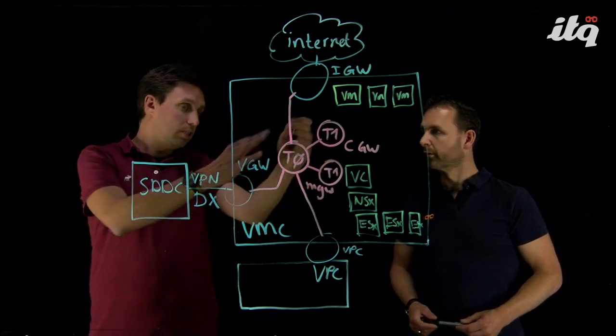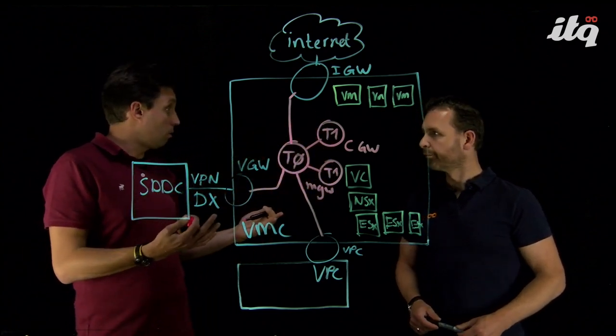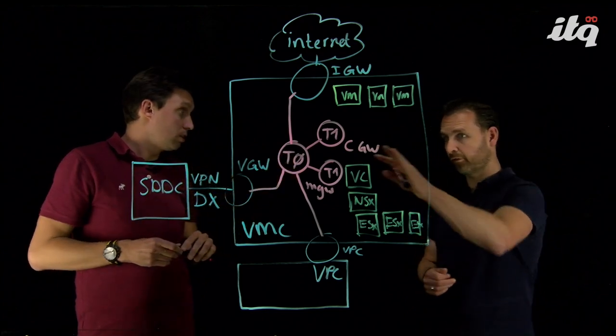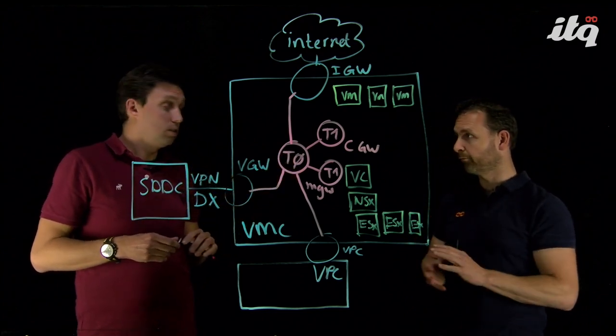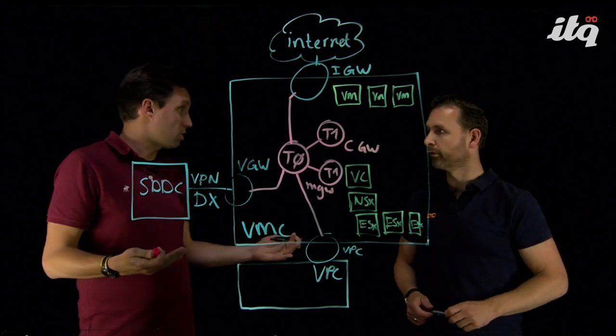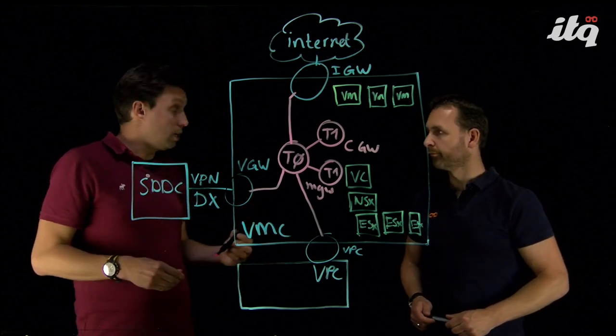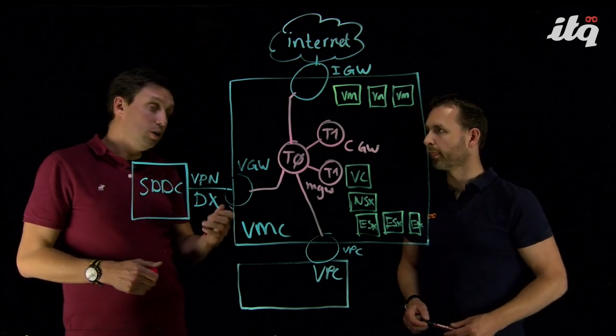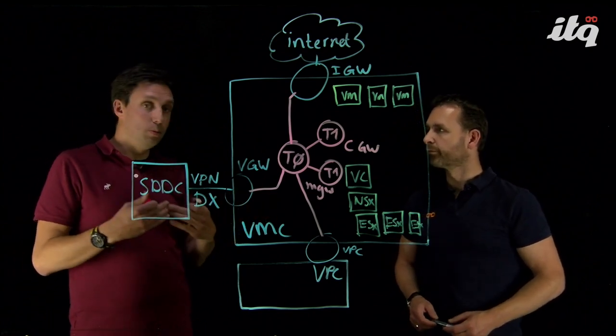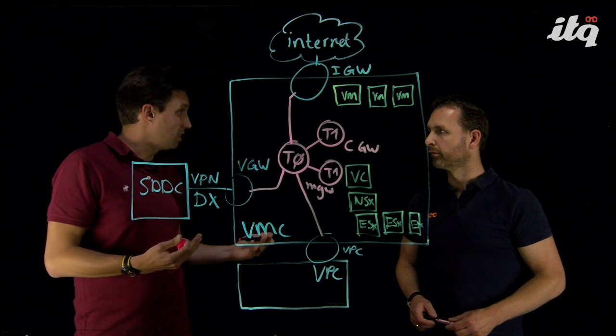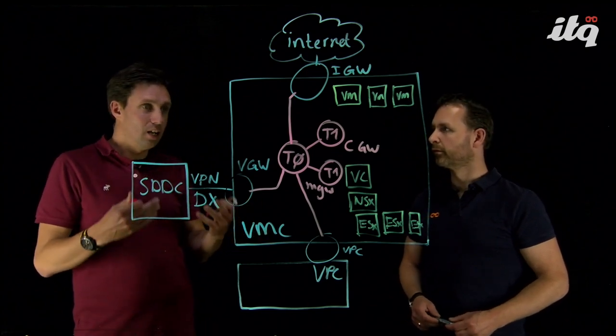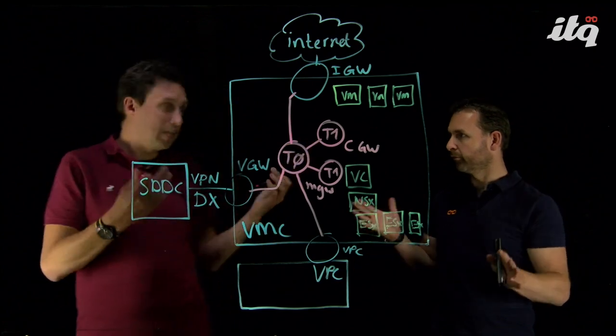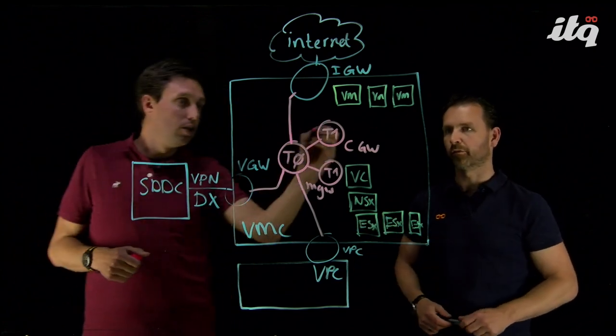These routers are made available by VMware, so it's all pre-configured. So I don't have to deploy these routers myself, I don't need to configure them? No. This is part of the service. You have to do some configuration, for example, for the T1 router, you are able, as a consumer, to deploy what we call segments. And a segment is actually a layer 2 networking segment. Kind of like a VLAN. Kind of like a VLAN. Correct. Conceptually.